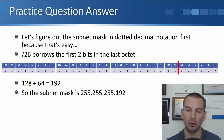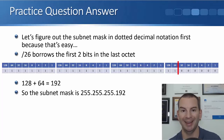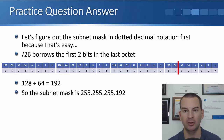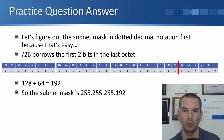In the fourth octet where we're doing the subnetting, the ones are in the 128 and the 64 positions. So we add 128 and 64 together to give us 192. So a /26 in dotted decimal notation is 255.255.255.192.